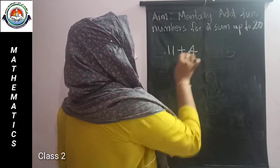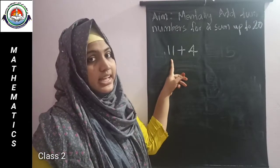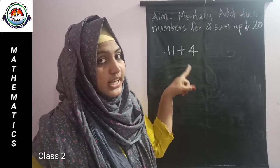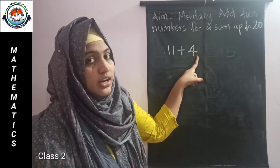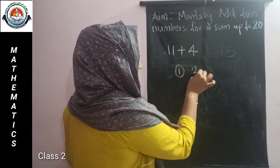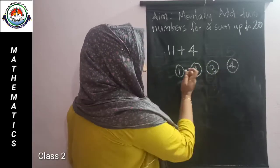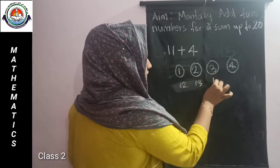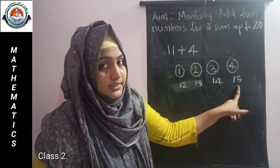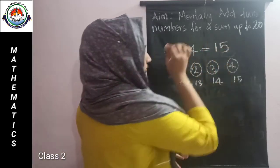11 plus 4. The bigger number is 11. We count on as many as the small number. The small number is 4. After 11: 12, 13, 14, 15. The last number we got is 15. So the sum is 15.